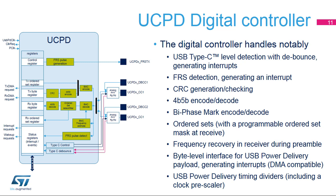The digital controller handles USB Type-C level detection with debounce, Fast Role Swap detection, CRC generation and checking, 4B/5B encode and decode, bi-phased mark (BMC) encode and decode, and transmission and reception of ordered sets. A clock data recovery unit in the receiver recovers the transmission clock from the received bitstream. The digital controller offers a byte-level interface for USB power delivery payload, generating interrupts. A DMA channel can assist the transfer of message payloads. The UCPD module implements two clock domains: APB register interface clocked by PClock and PHY clocked by USB-PD clock. USB-PD clock is divided by a programmable pre-scaler to provide the CC clock whose maximum frequency is 300 kbps.